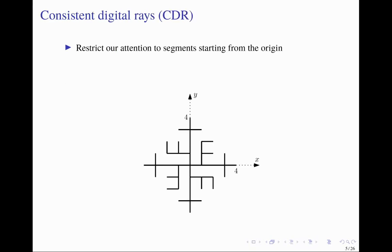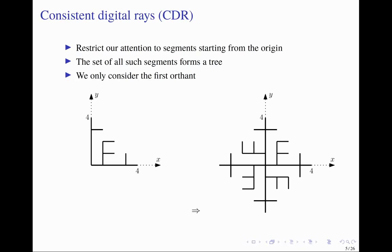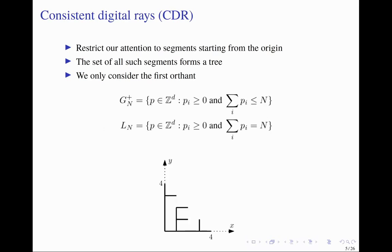Even though our final goal is to have a construction of consistent digital line segments connecting any pair of grid points, we now restrict attention to segments that start from the origin and connect it to any other grid point. Such a set is called consistent digital rays. The set of such segments forms a tree. We only consider the first octant, because by rotating copies of it we can fill out the remaining space. Finally, we limit our domain to grid points whose sum of coordinates is at most N, calling this domain G_N. The set of grid points whose coordinate sum equals N is called the N-th layer.